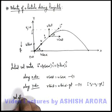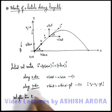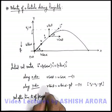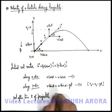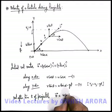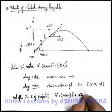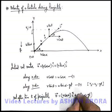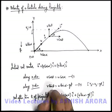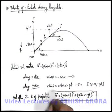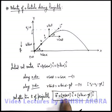After time t, for velocity of projectile, this v vector can be written as u cos alpha i cap plus u sin alpha minus g t j cap. This is the relation we use for velocity of projectile after time t. Using this you can easily calculate the magnitude as well as the direction in which the particle is moving.